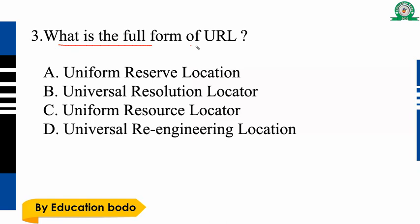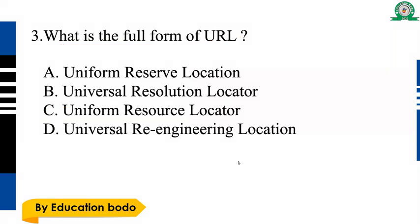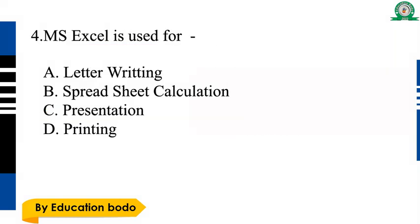Question number three: What is the full form of URL? Option C is the right answer — Uniform Resource Locator. So option C is the right answer.